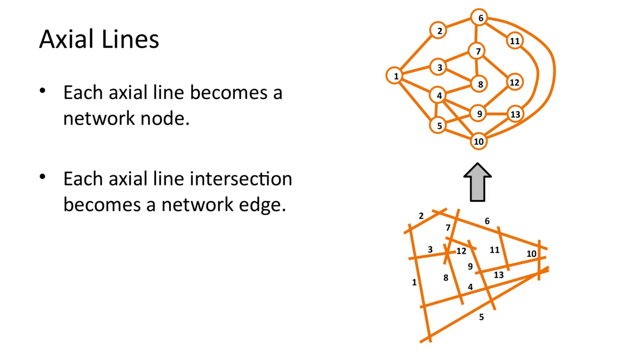This means that a long straight street can be represented as a single node in the network. In the example, we can see that the first Axial Line, labeled 1, becomes a single node in the network, with four edges representing the four points of intersection with other axial lines.